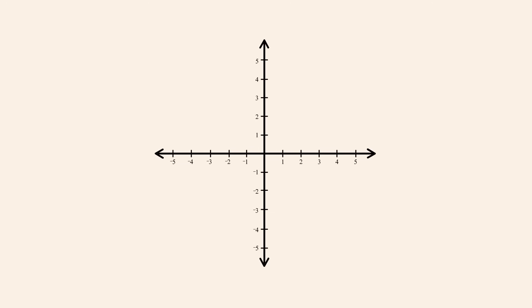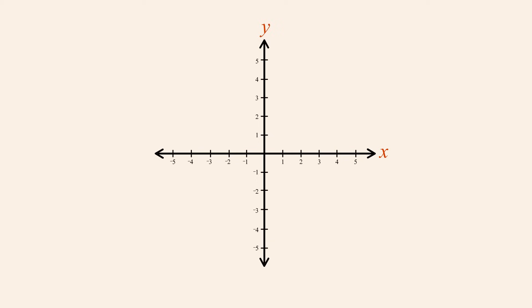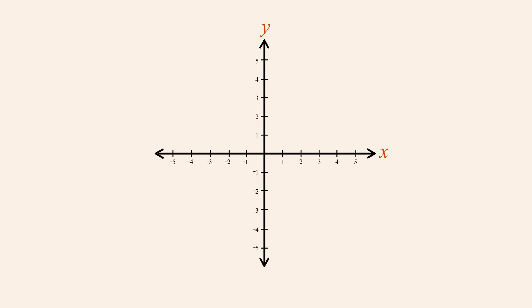The perpendicular number lines in the Cartesian coordinate system are referred to as axes. The horizontal and vertical axes are often called the x-axis and y-axis. Sometimes these two axes are referred to as the abscissa and the ordinate. The point where the axes meet represents the number zero on each axis. This is called the origin of the coordinate system, and it corresponds to the ordered pair (0, 0).